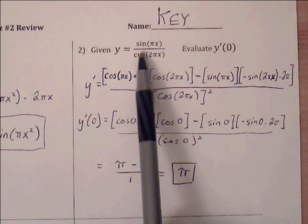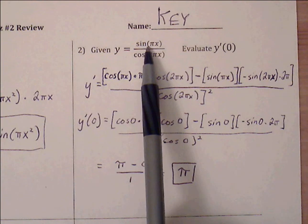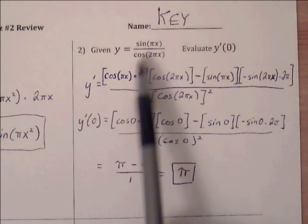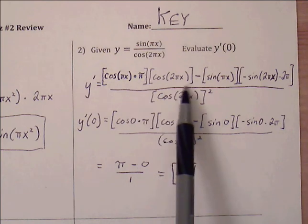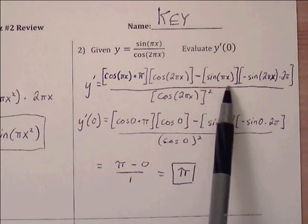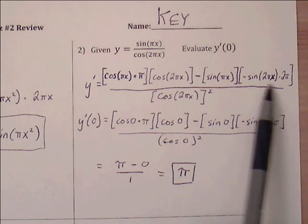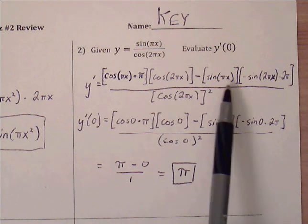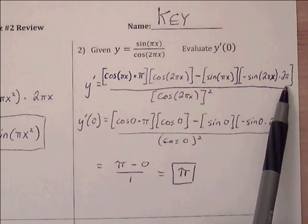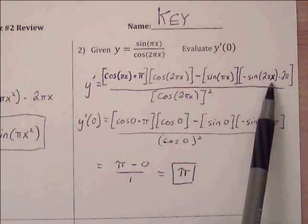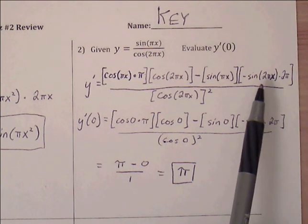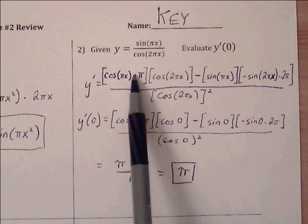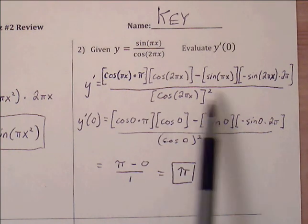Applying the quotient rule, f prime g: the derivative of sine(pi x) is cosine(pi x) times pi. Then f prime g minus f g prime — the original function on top, times the denominator's derivative. Cosine of u becomes negative sine of u times u prime, so the derivative of 2 pi x becomes 2 pi. That takes care of the numerator of our quotient rule, f prime g minus f g prime, all over g squared.